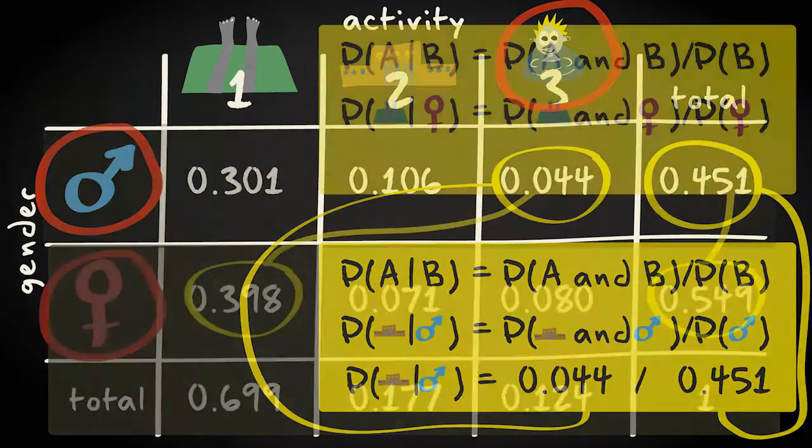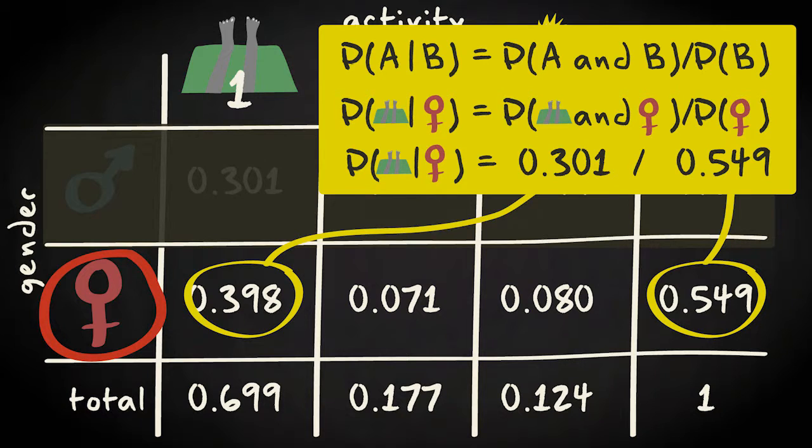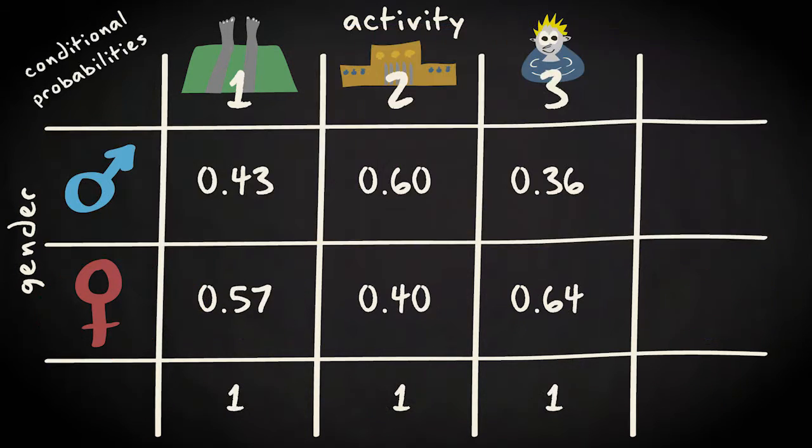And for females, the conditional probabilities for the activities will be calculated by dividing with 0.55. The resulting conditional probabilities for the activities given gender are shown here.